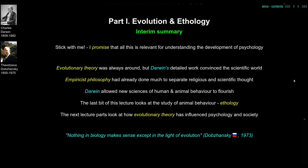To summarise what we've done so far: evolutionary theory was always around in philosophy and science, but Darwin's detailed work over 20 or 30 years was enough to convince the scientific world completely. Darwin's thoughts were a challenge to the religious world, but empiricist philosophy — the British empiricist school — had already done quite a lot to separate religious belief and scientific thought. Remember Hume, who separated the religious and scientific philosophical notions. Darwin's book then gave permission for a whole new set of sciences of human and animal behaviour to flourish, without needing to please the philosophers anymore.